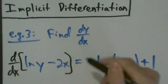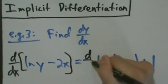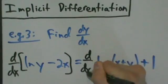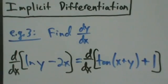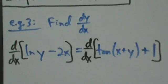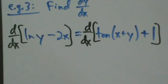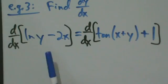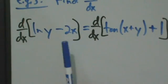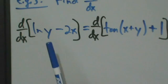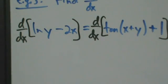So d/dx of the left equals d/dx of the right. Now let's go ahead and work out what this will be. So here we have ln y, and we're going to have to do some implicit differentiation here. Remember, implicit differentiation is just the chain rule. That's all it is, just the chain rule.